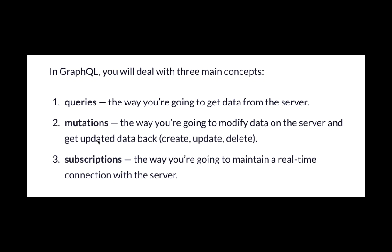In GraphQL, you will deal with three important concepts: queries, mutations, and subscriptions. Queries are the way you get data from the server. Mutations are like create, update, and delete — the CRUD operations. Queries are used for retrieving data. Mutations are the way you modify data on the server and get updated data back, so you can create, update, and delete data with the help of mutations.